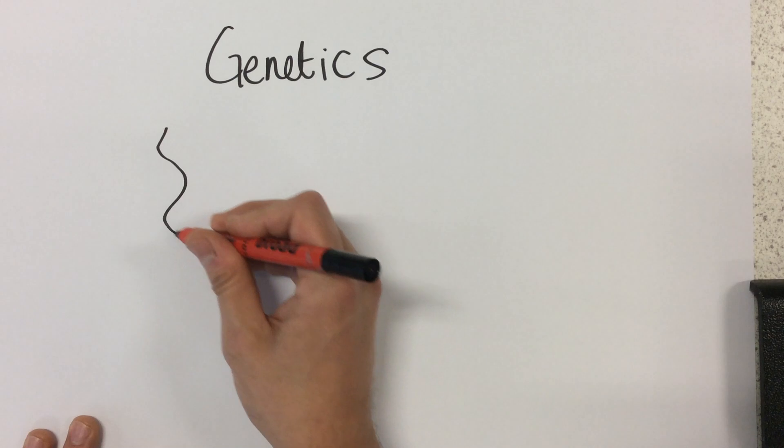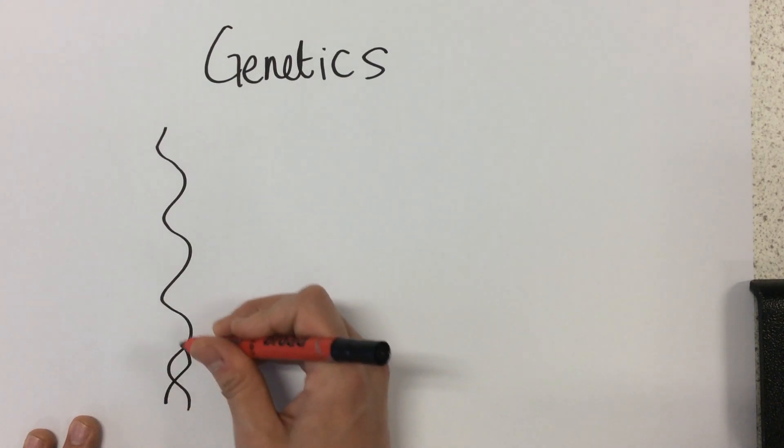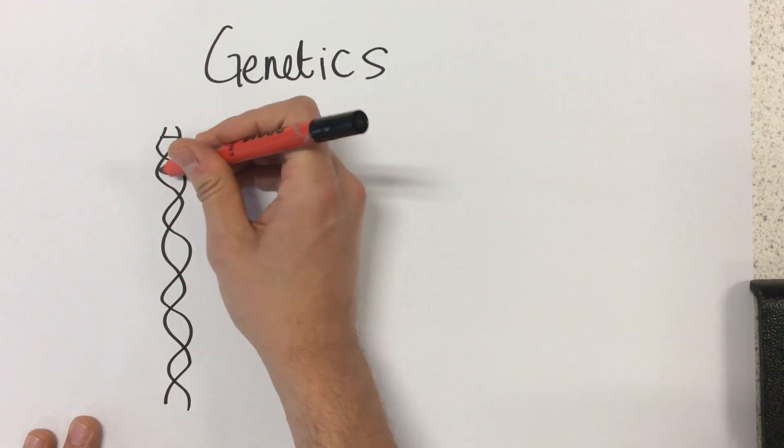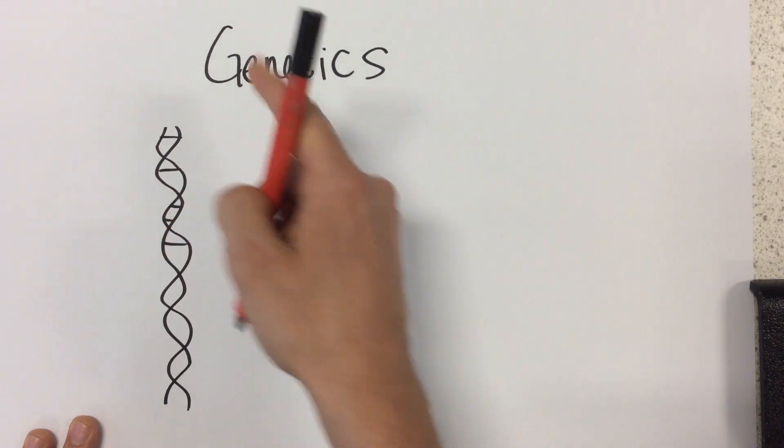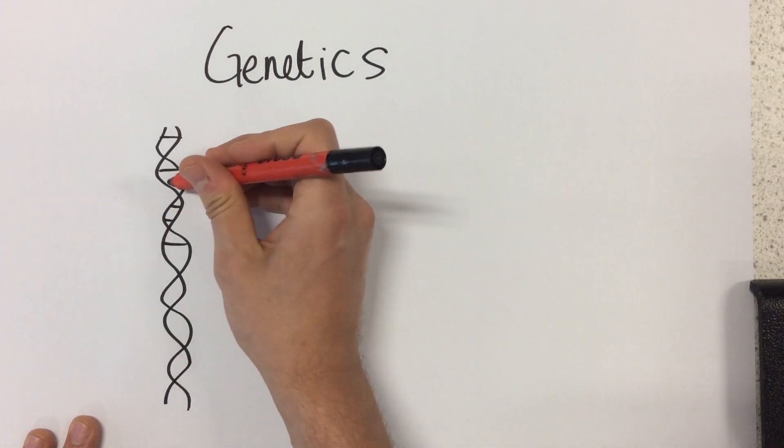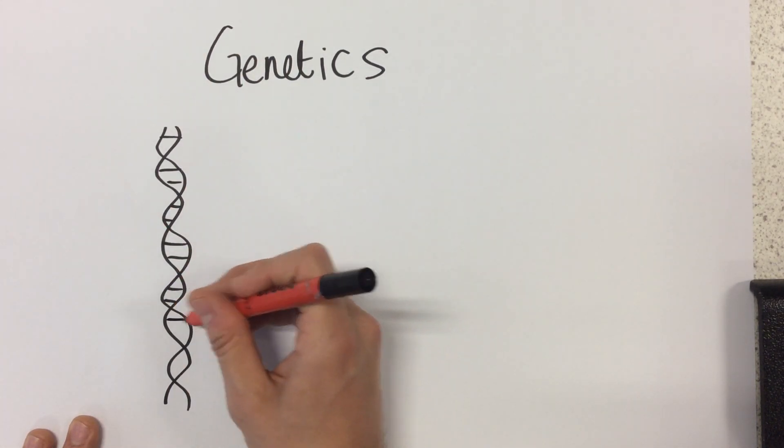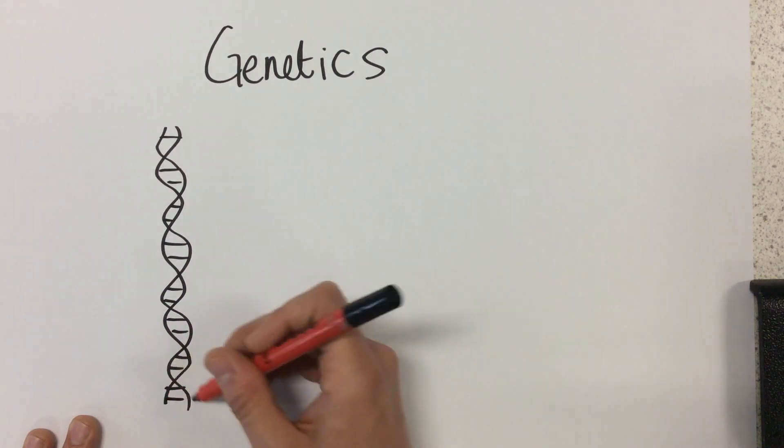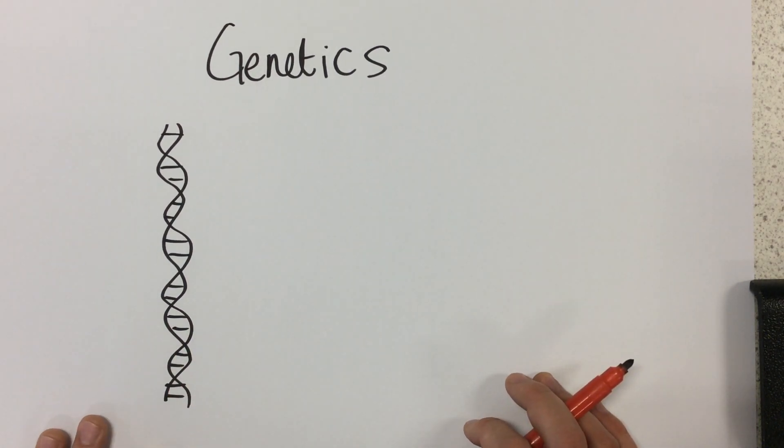So first of all, we have DNA. In all of our cells in our body, it contains this double helix shape, that's kind of like a twisted ladder shape, a molecule called DNA, which contains all the genetic information about how to make anything in your body.